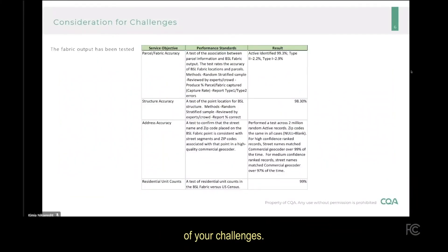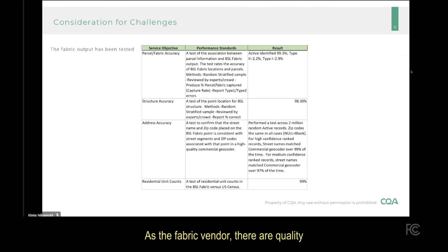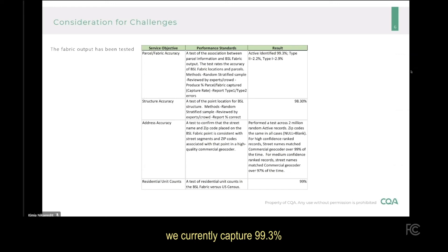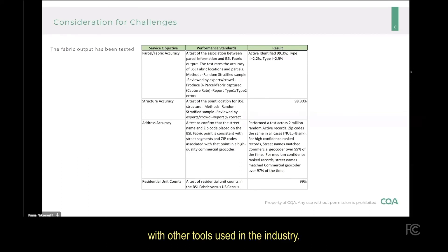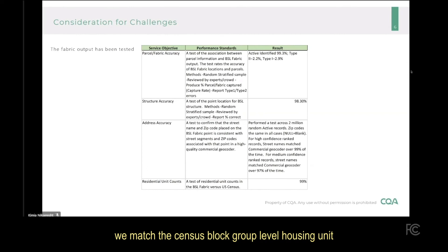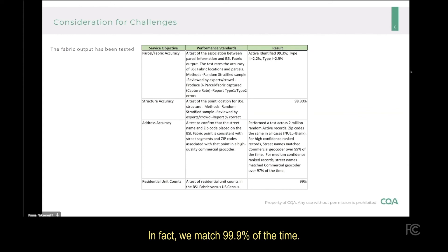As a final note, as you consider the magnitude of your challenges, let me walk through some high-level quality statistics. As the fabric vendor, there are quality statistics we must meet with each release. In testing, we currently capture 99.3% of the parcels that have a BSL. In selecting the BSL from the footprints on the parcel, we successfully select the correct structure over 98% of the time. In reviewing addresses, we are consistent with other tools used in the industry. And in testing residential unit counts, we match the census block group level housing unit counts in over 99% — in fact, 99.9% — of the census block groups in the country.